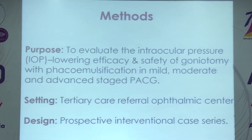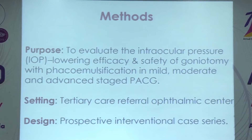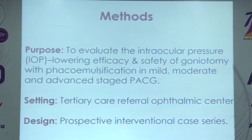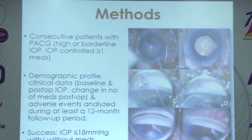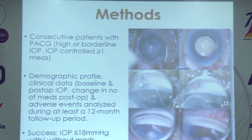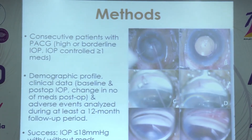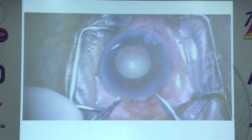This study was conducted to evaluate the intraocular pressure-lowering efficacy and safety of goniotomy with phacoemulsification in mild, moderate, and advanced stages of primary angle-closure glaucoma. It was a prospective interventional case series. We enrolled consecutive PACG patients with high, borderline, or medication-controlled IOP who were taken up for phacoemulsification. Post-operative change in number of medications and IOP was analysed over 12 months. Success was defined as IOP ≤18 mmHg with or without medications.